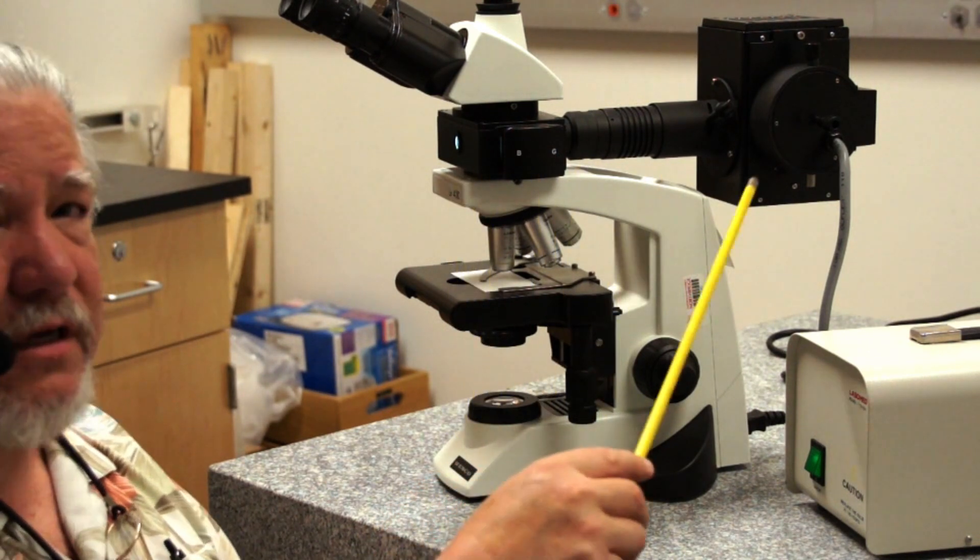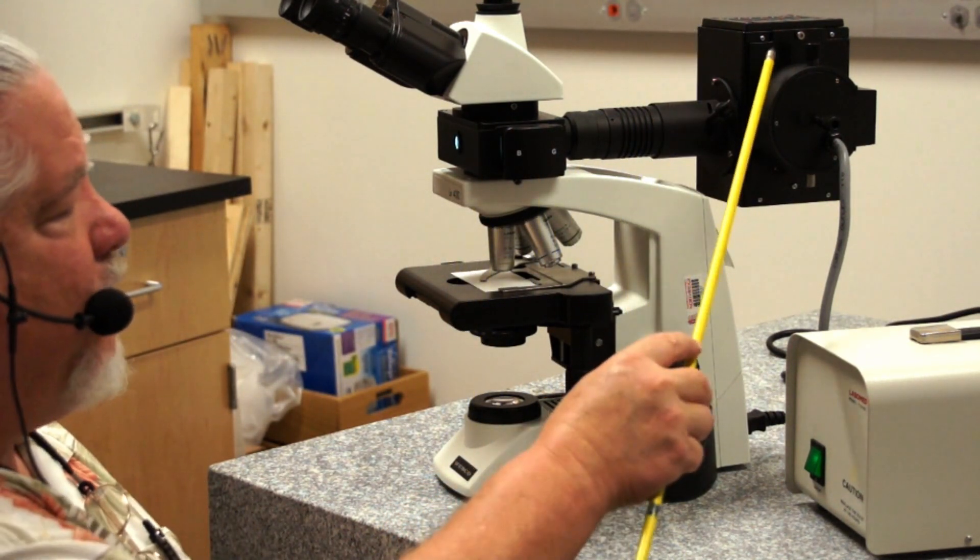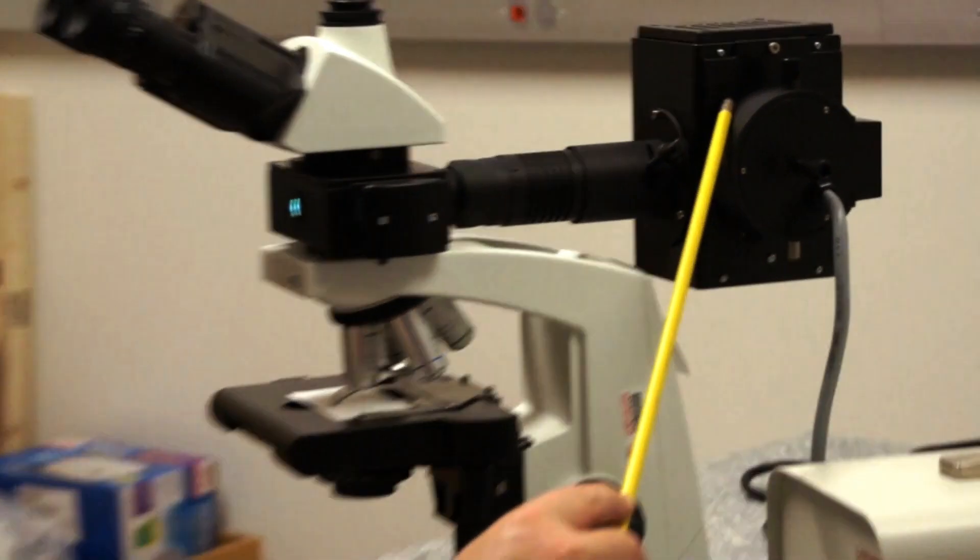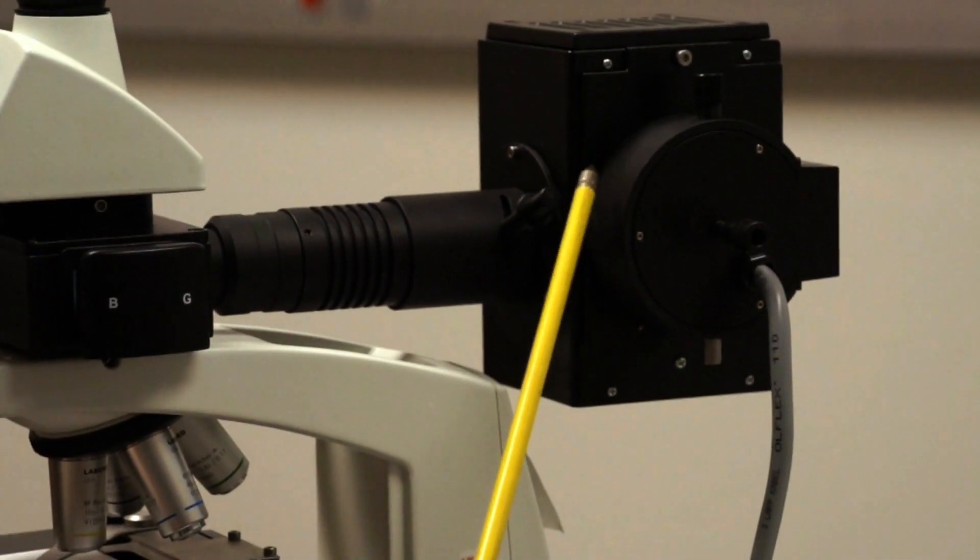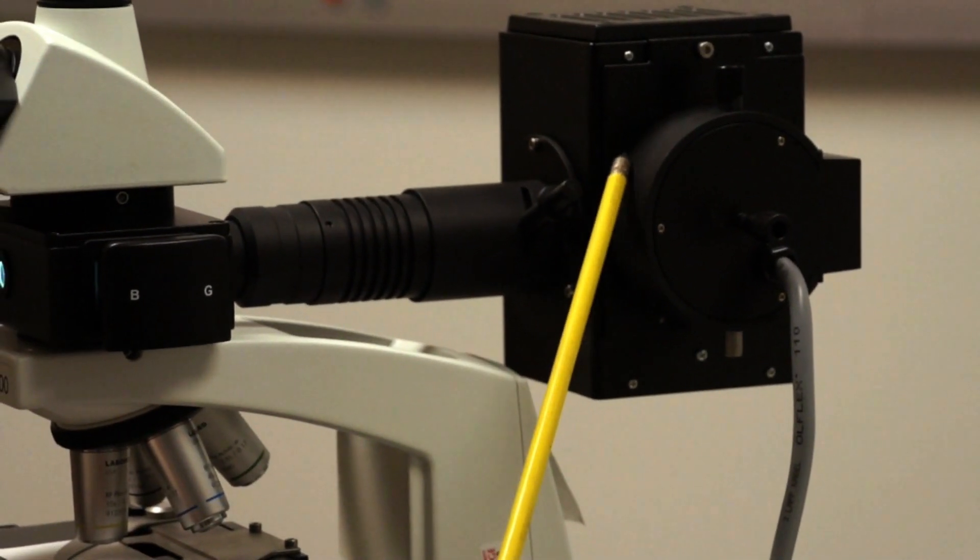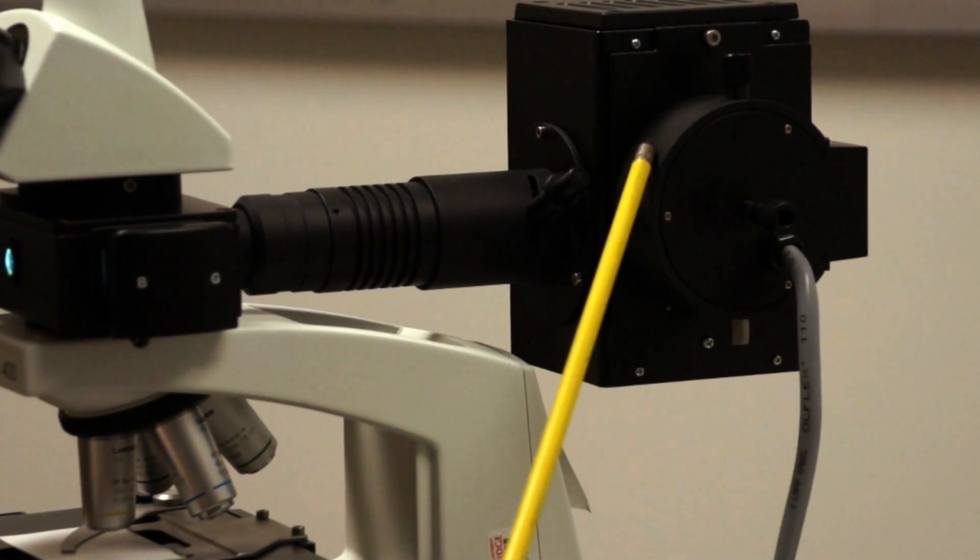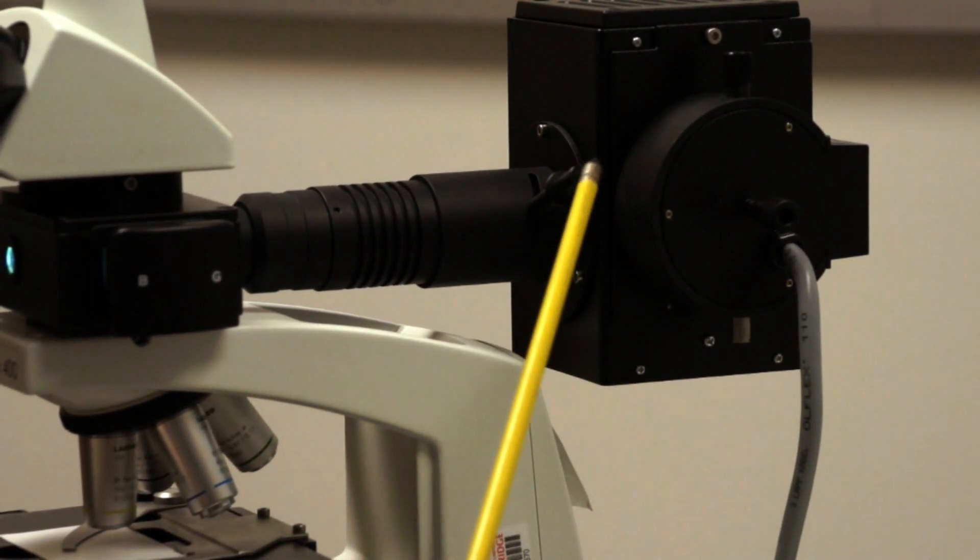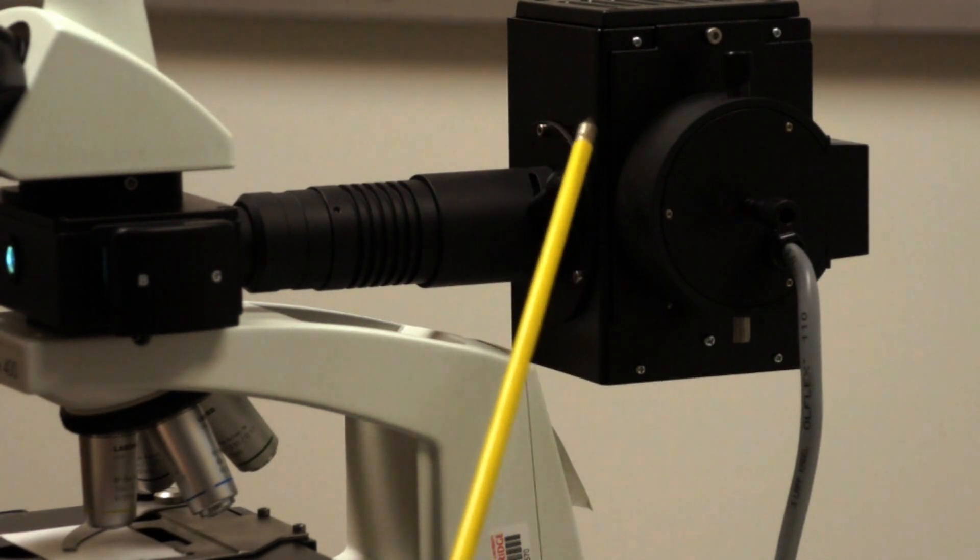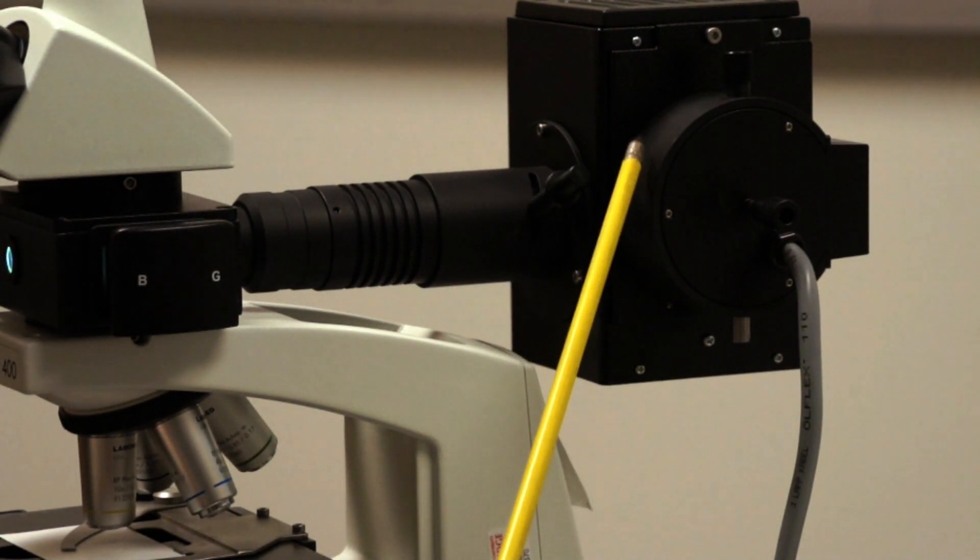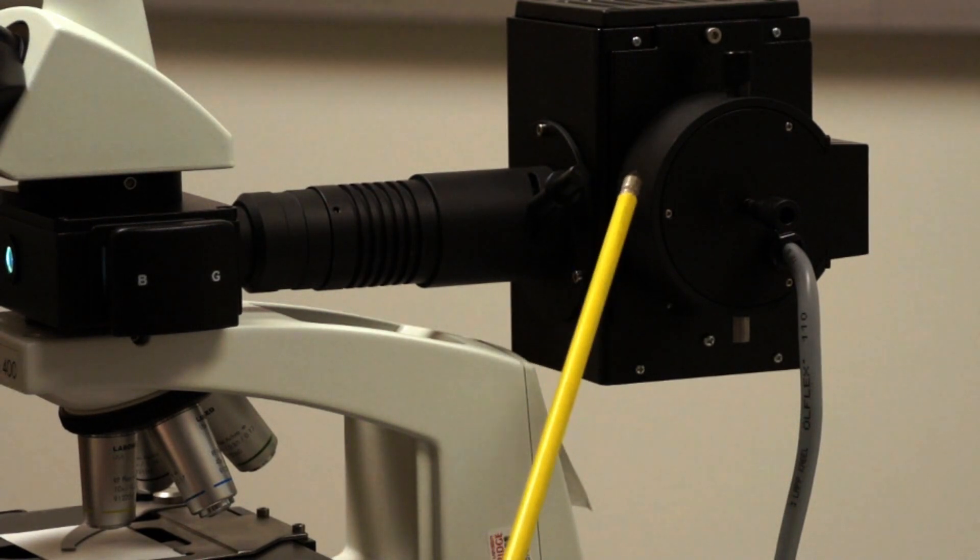So let's discuss the components of the reflected light illuminator. Here we have a large lamp housing which holds a bulb that burns very brightly. Typically these are called mercury vapor pressure bulbs. These are high pressure bulbs that must be handled very carefully because they can explode and destroy your lamp house. And this puts out a tremendous amount of illumination.